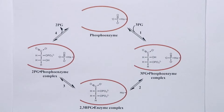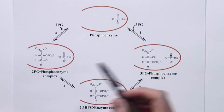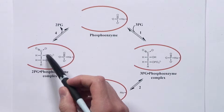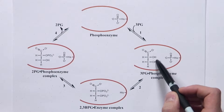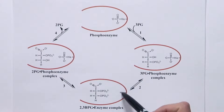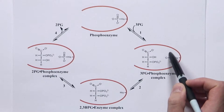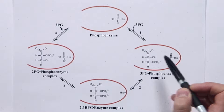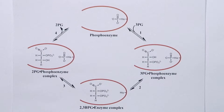Note that the phosphate group is, in fact, not directly transferred. This phosphate group here is not the same that ends up on the 2-position. Rather, this phosphate group gets transferred to the enzyme, and the phosphate group from the enzyme ends up on the second position of glycerate.